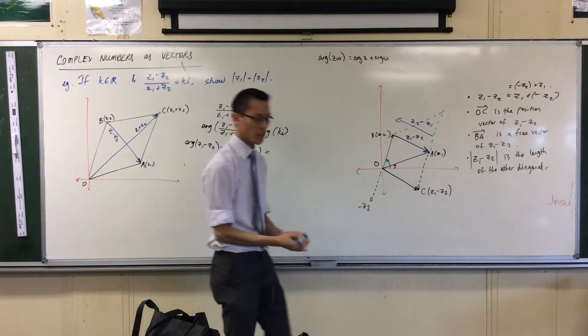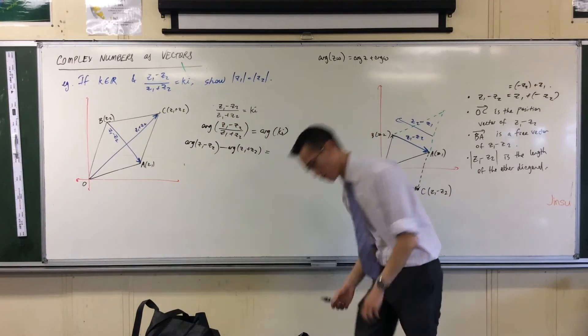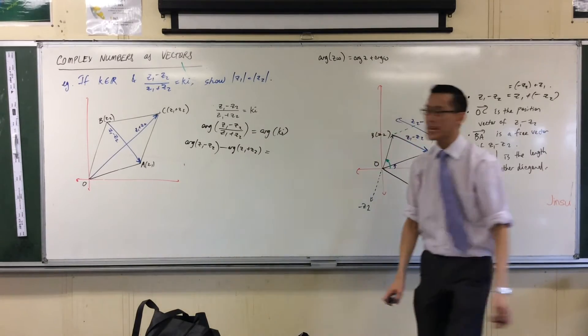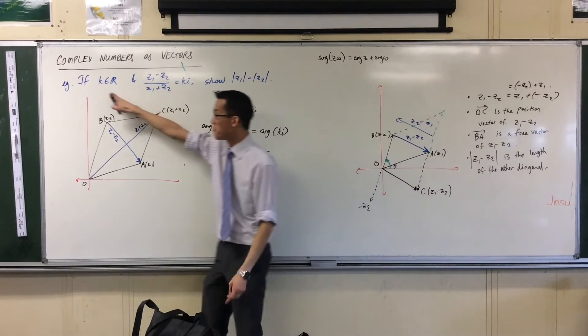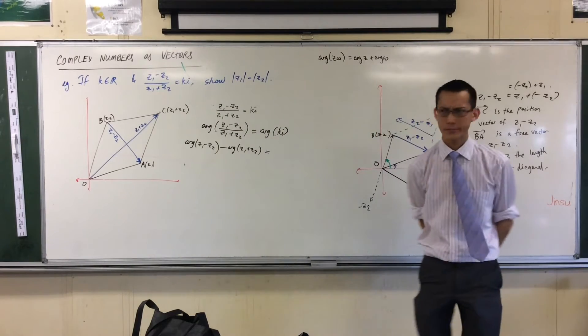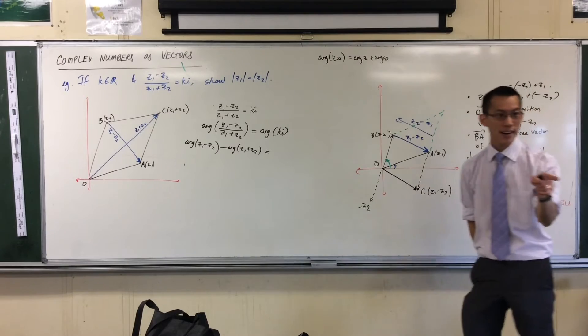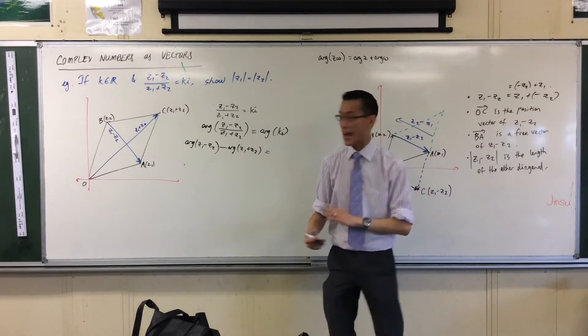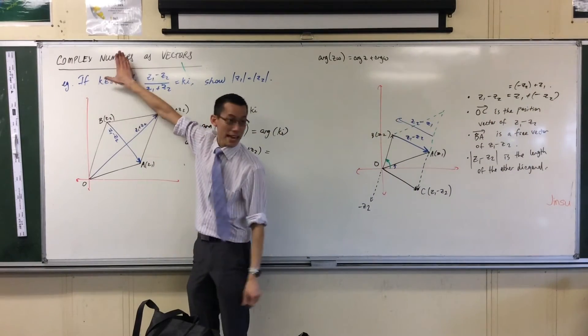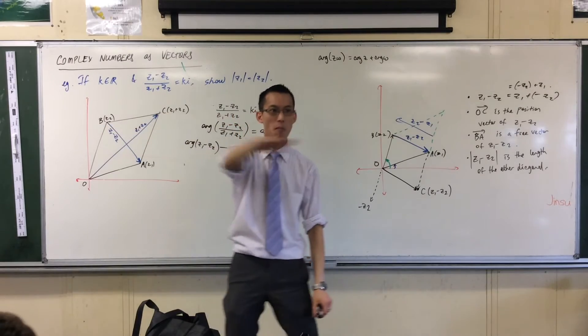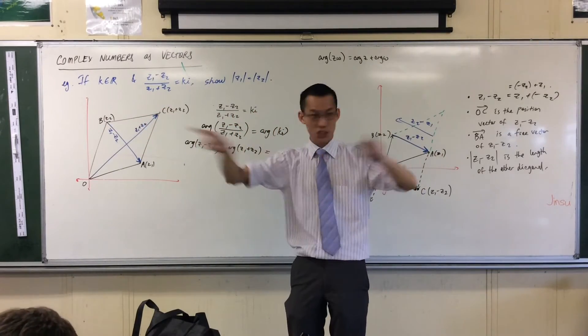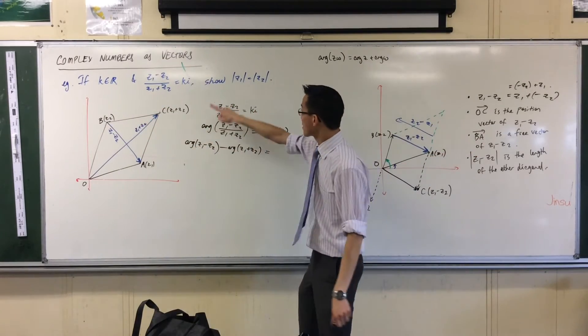What's the argument of ki, recognizing that k is any real number you like? If I say that k is just a real number, then k itself is on the real axis, somewhere. Once I do ki, I know it's on the imaginary axis. I don't know how far up or down or which side, but it's on there.